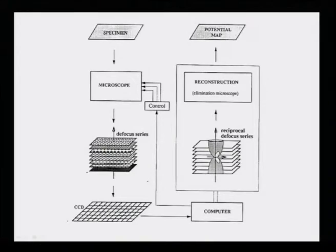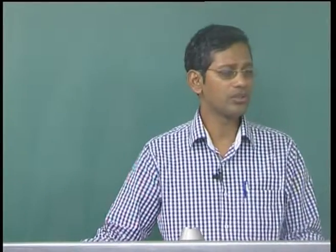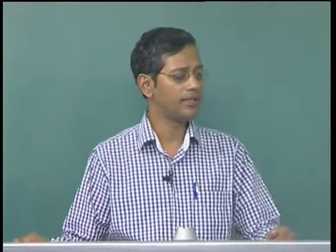During the imaging process, the electrons undergo three distinct interactions, and each of these interactions can be simulated in a computer. The first interaction electrons undergo is called dynamical scattering of the electrons in the sample or specimen.